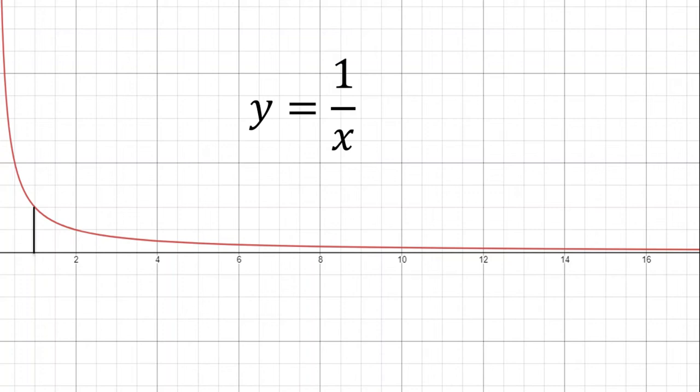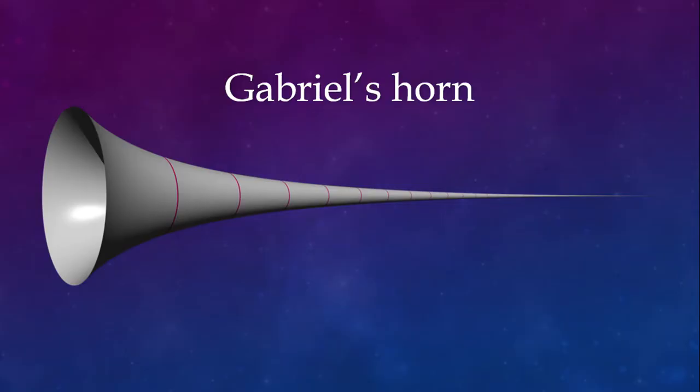Consider the function y equals 1 over x, where the value of x is always greater than or equal to 1. And rotate this curve along the x-axis such that it creates a surface of revolution. And what we are left with is a geometrical shape that looks something like this.